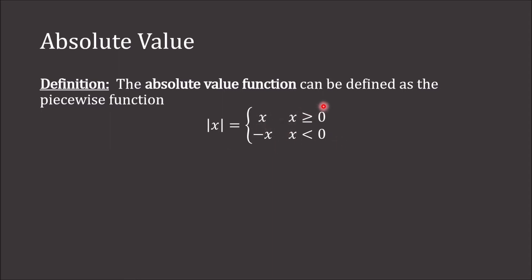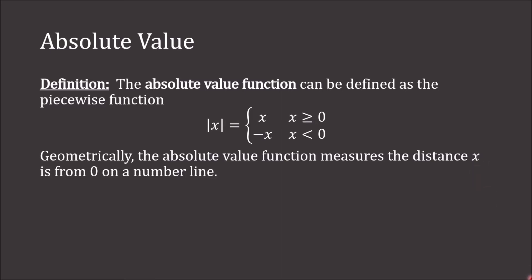So if x is greater than or equal to zero, then the absolute value function just spits out that value. However, if x is less than zero, the absolute value function will multiply it by negative one and then spit out the result. Geometrically, the absolute value function measures the distance the point x is from zero on a number line.